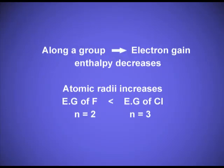Along a group, electron gain enthalpy decreases from top to bottom because atomic radii increases. For example, the electron gain enthalpy of fluorine is less than that of chlorine, which is only due to the increase in size — the atomic radius of chlorine is larger than that of fluorine.